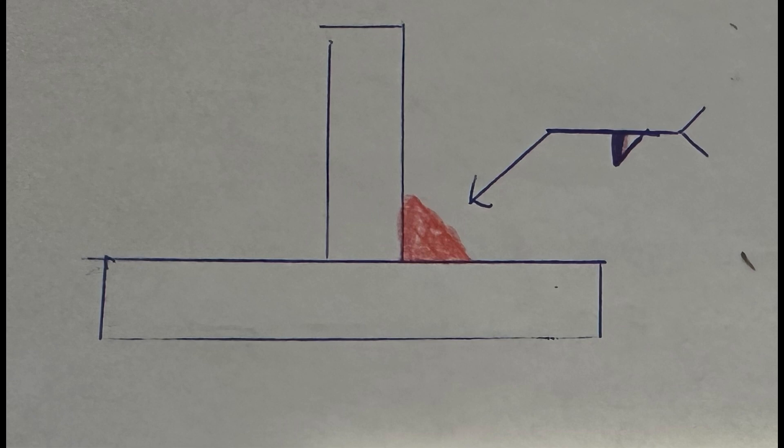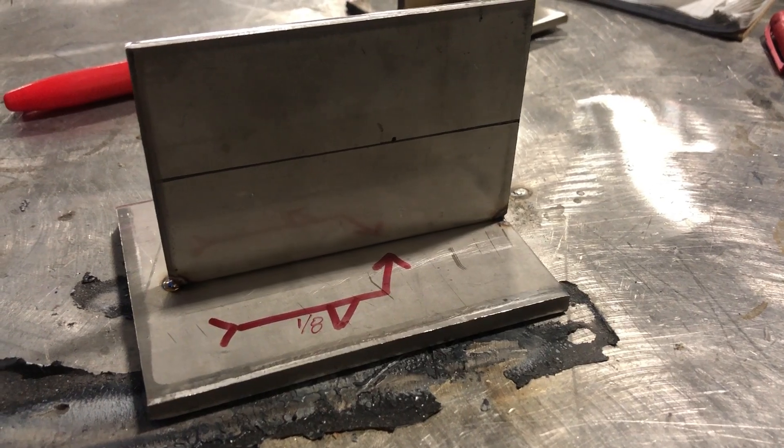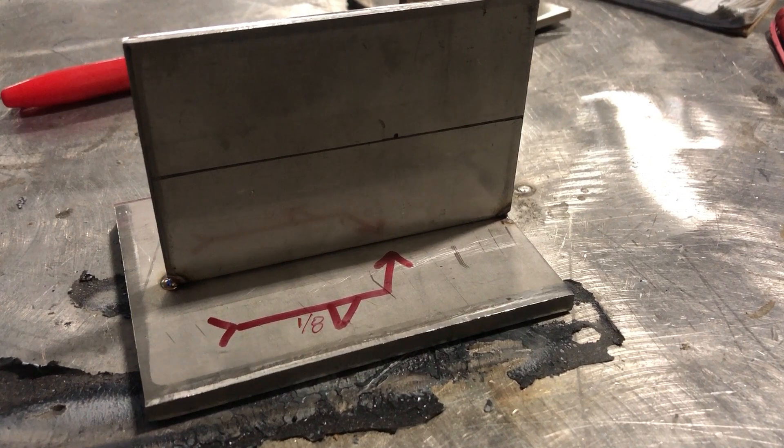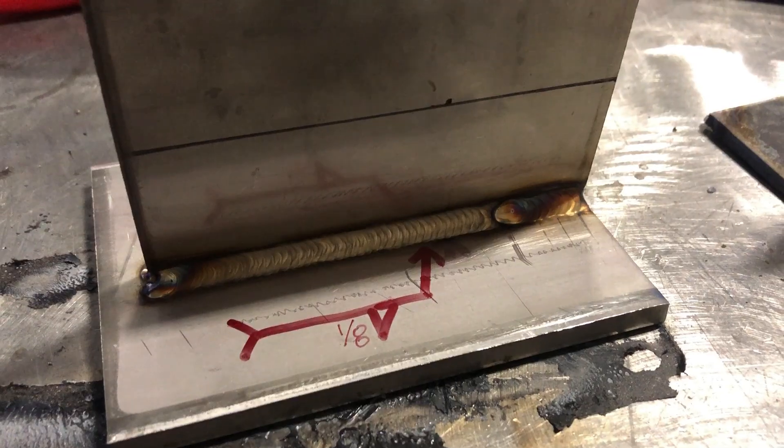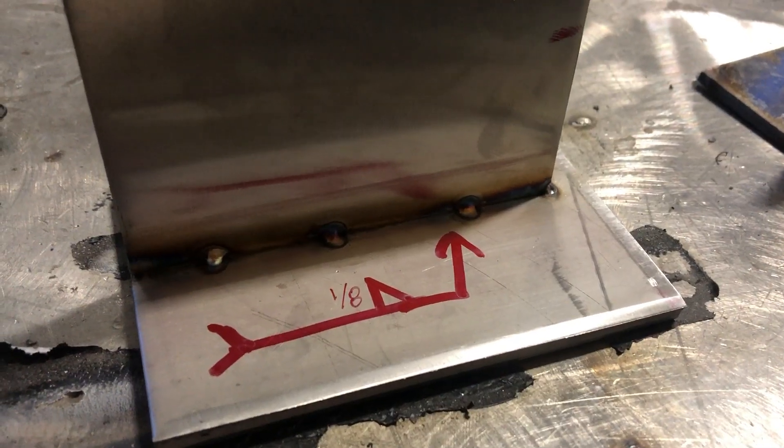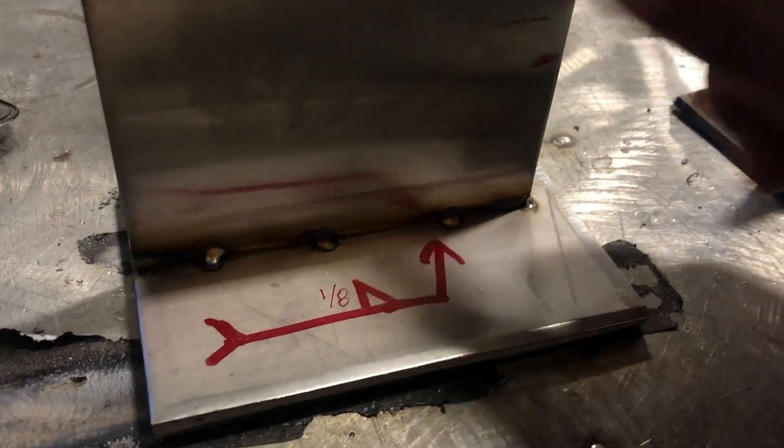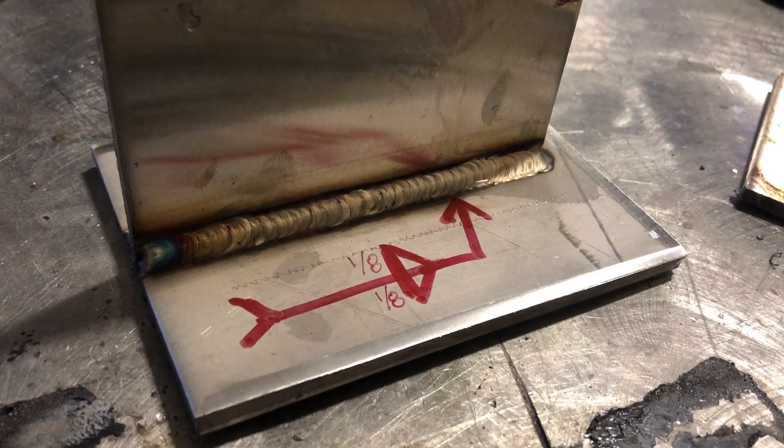Weld symbol under the reference line means you weld the joint at the arrow point. Weld symbol above the reference line means you weld the joint to the other side of the arrow point. Let's take a look at the video clip to understand this. Fillet weld symbol is under the reference line, so you weld the joint at the arrow points. Fillet weld symbol is above the reference line, so you weld the joint to the other side of the arrow point. Fillet weld symbols are on both sides. You weld both joints.